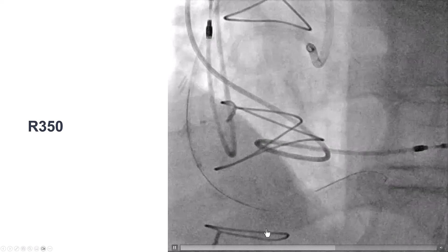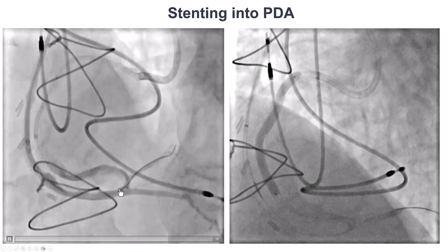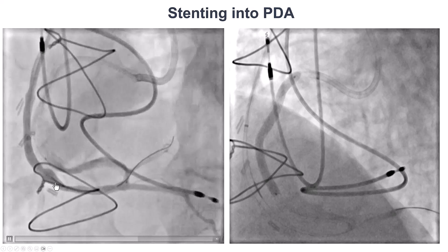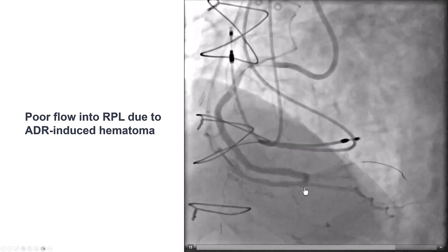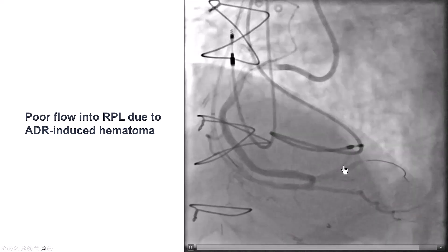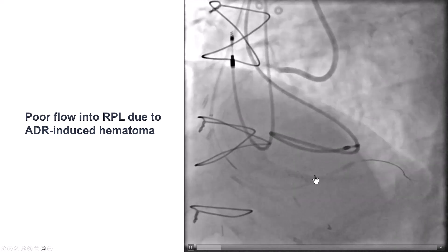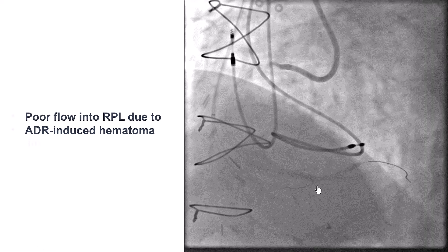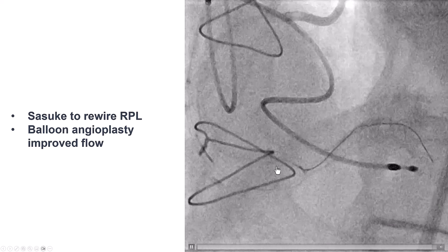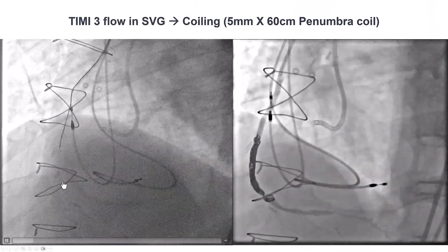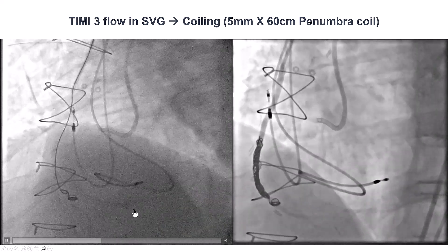We externalized an R350 guide wire and pre-dilated. We decided to stent all the way into the PDA, jailing the posterior lateral, but maintained a guide wire from the vein graft into the posterior lateral for safety. After stenting into the proximal RCA, we had good flow into the PDA but poor flow into the right posterior lateral — likely because the antegrade knuckle wire had advanced too far, creating a hematoma compromising the lumen. We used the Sasuke to advance another guide wire into the right posterior lateral and performed balloon angioplasty, including a cutting balloon to drain the hematoma, which improved flow into the posterior lateral.